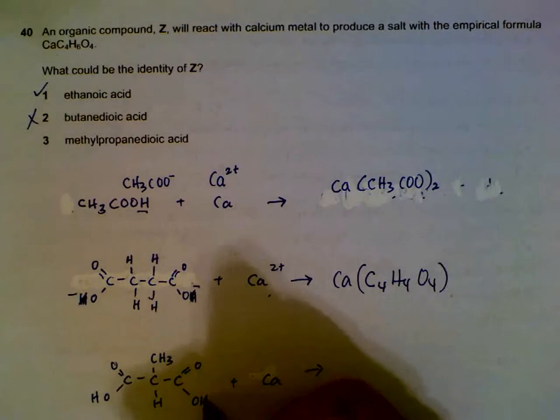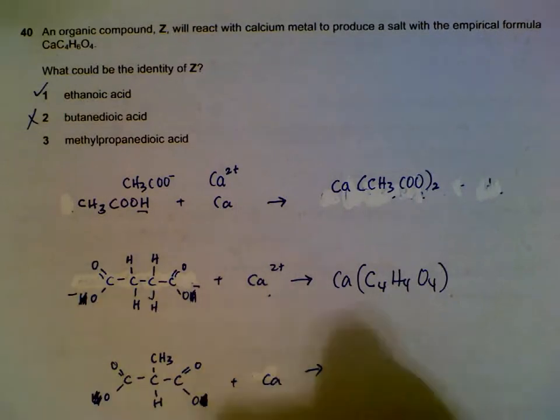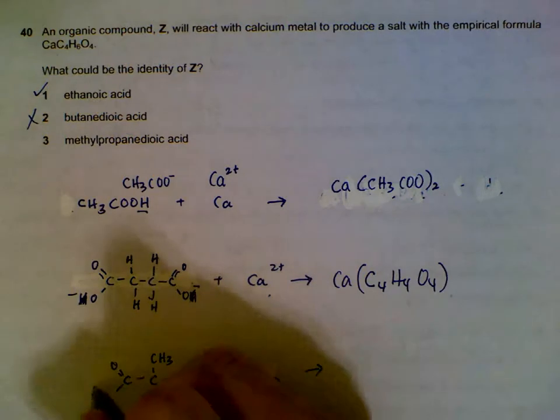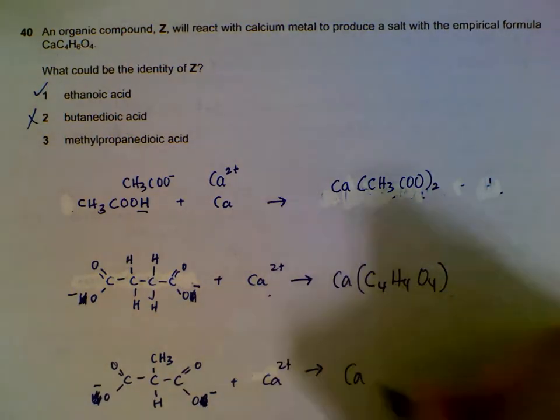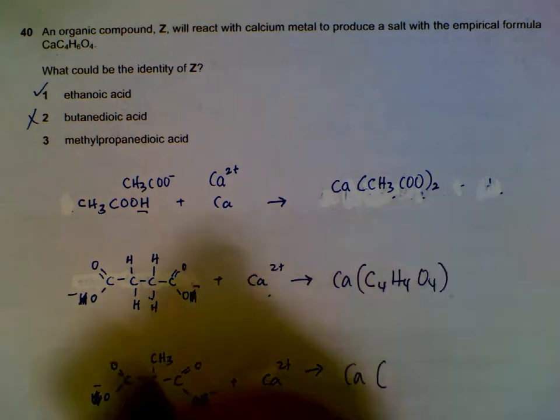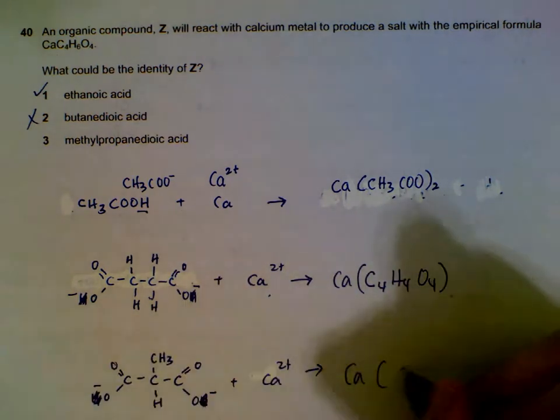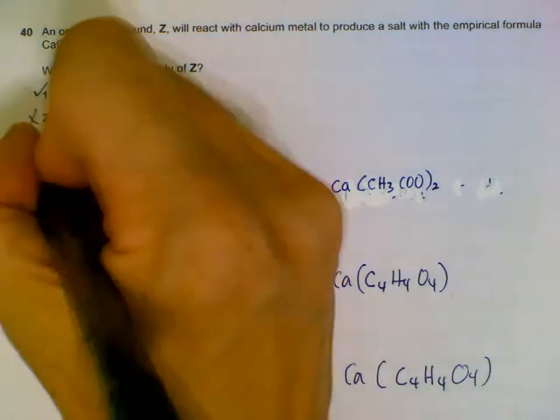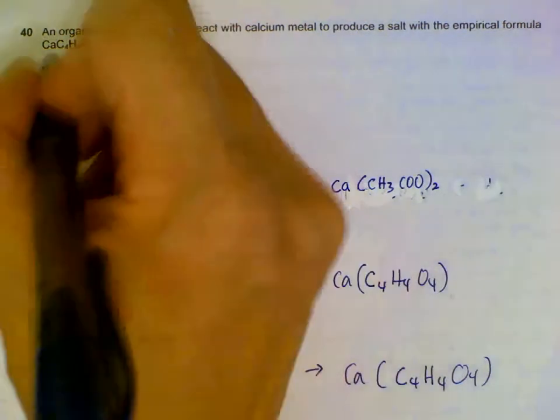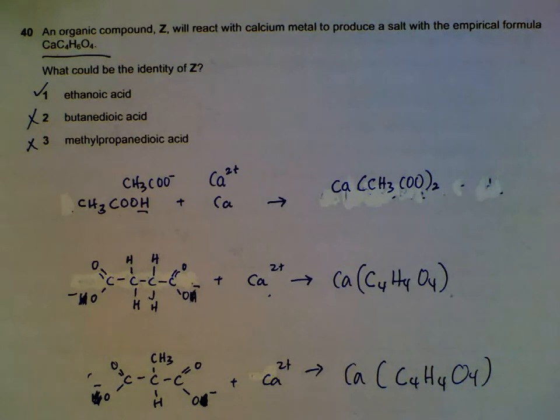Same approach - we can lose a hydrogen here, we can lose a hydrogen here, we get a 2 minus charge. So we will get Ca, one of it, and one of this molecule, which is C4 H4 O4 again, not the formula that we want over here. So only one is correct.